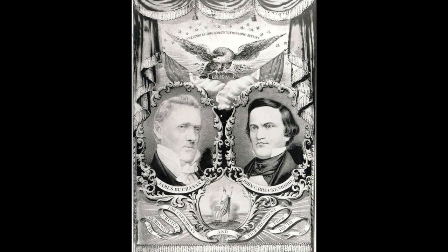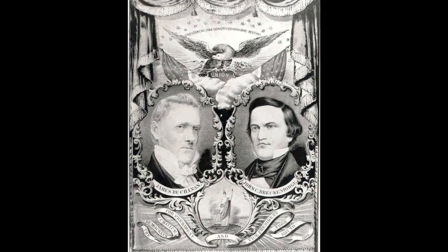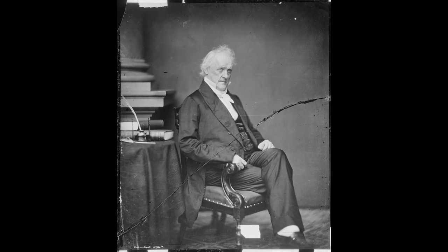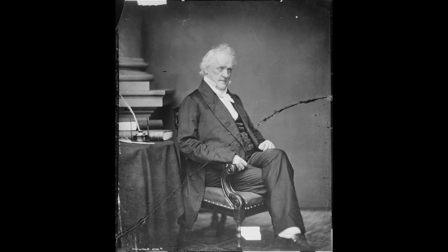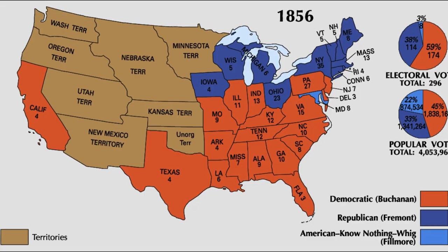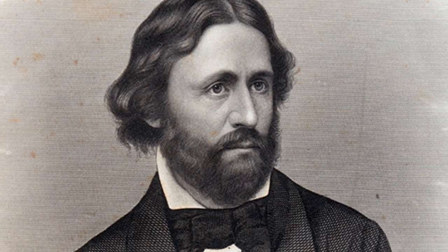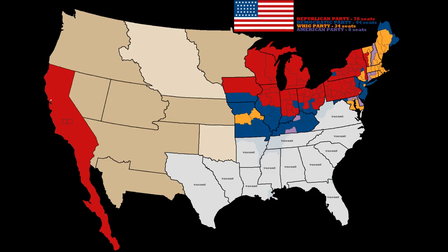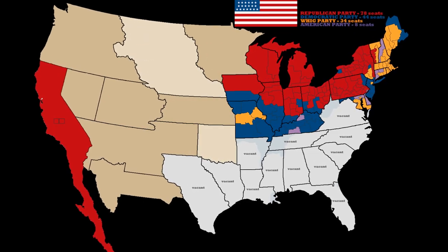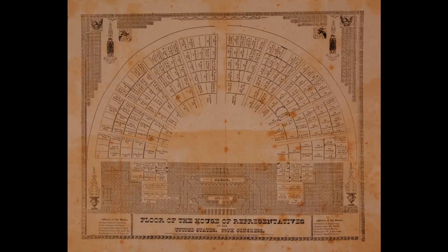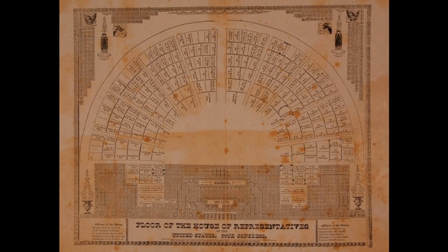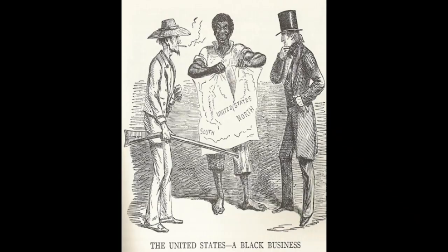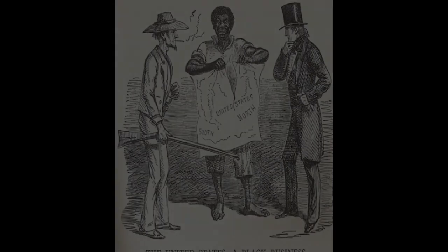Even the presidential election of 1856 was divided along sectional lines. Democrat James Buchanan, who supported popular sovereignty, won the presidency by winning all of the Southern states and most of the border states. Republican John C. Fremont, who supported the prohibition of slavery in new territories, did not receive a single electoral vote in the South. The new Republican Party won a majority in the House of Representatives despite winning no seats in the South, showing a deep sectional divide and demonstrating that slavery was the most important issue in the election.